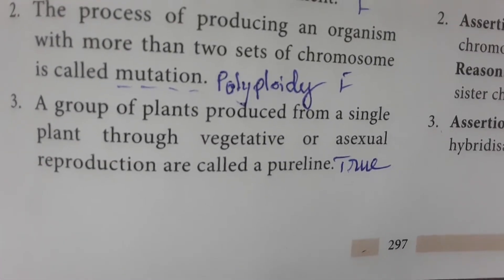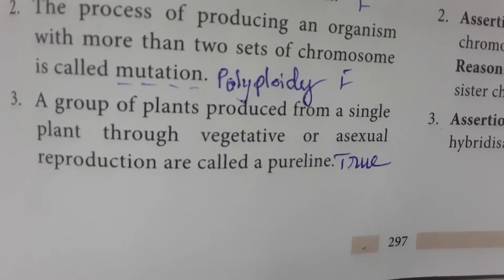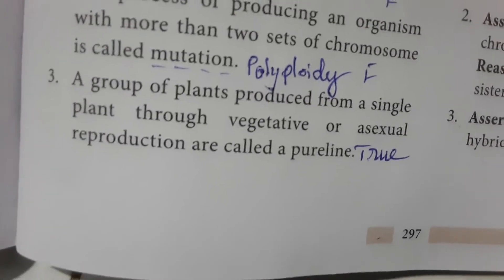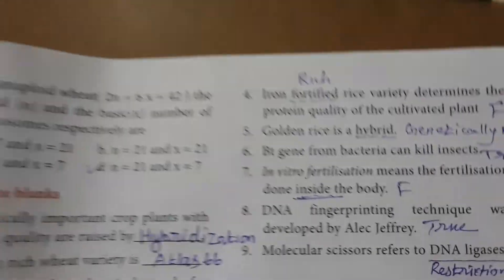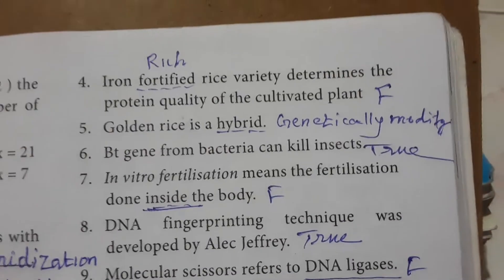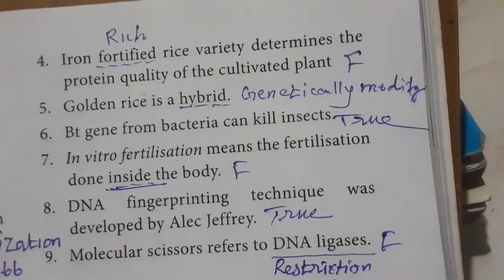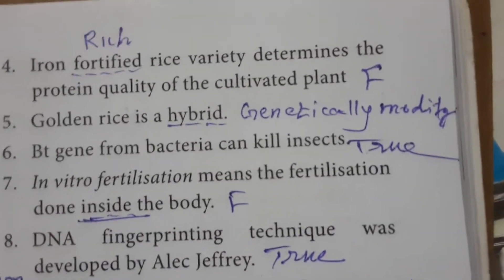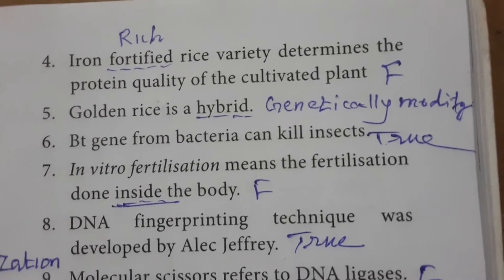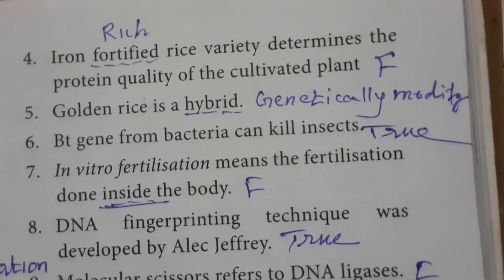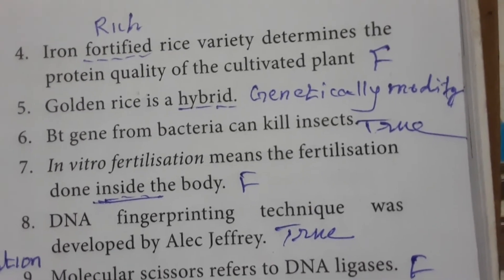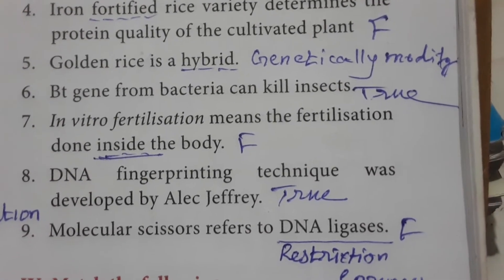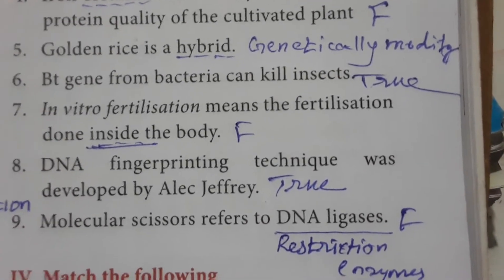A group of plants produced from a single plant through vegetative or asexual reproduction is called a pure line — this is true. Iron-fortified rice variety determines the protein quality of the cultivated plant — this is false; iron-rich rice variety determines iron quality. Golden rice is a hybrid — false, because it is a genetically modified variety.